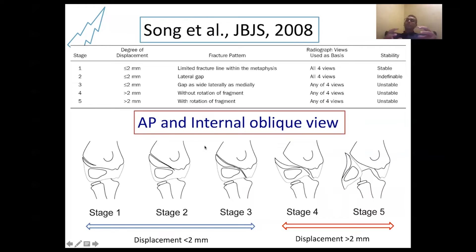Song et al. subclassified the lateral humeral condyle fracture into type one, which is only a metaphyseal fracture not extended to the physis; type two, which is a minimally displaced fracture without extension to the articular space with intact articular cartilage; and stage three, which is an undisplaced fracture that extends to the articular surface. These correspond to types one and two of Jacob classification. He then subclassified Jacob's type three, which is displaced fracture, into displaced and rotated subtypes.